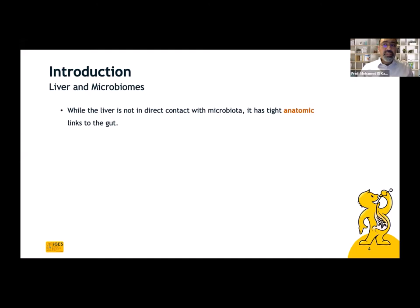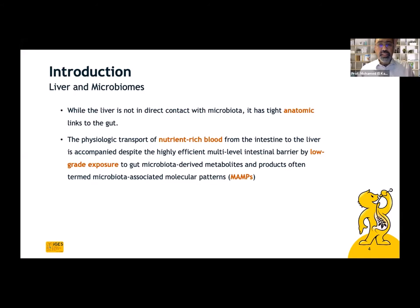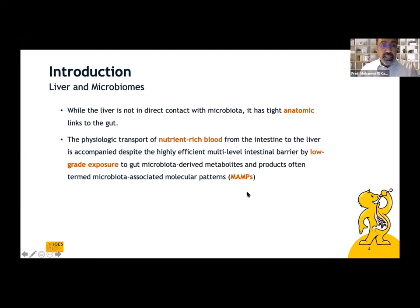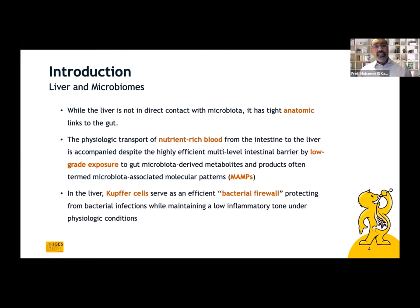Regarding the relationship between liver and microbiomes: while the liver is not in direct contact with microbiota, it has a tight anatomic link to the gut. The physiologic transport of nutrient-rich blood from the intestine to the liver is accompanied, despite the highly efficient multi-level intestinal barrier, by low-grade exposure to gut microbiota-derived metabolites and products, often termed microbiota-associated molecular patterns, or MAMPs. In the liver, Kupffer cells serve as the most important immune cells, acting as an efficient bacterial firewall protecting the liver from bacterial infections.